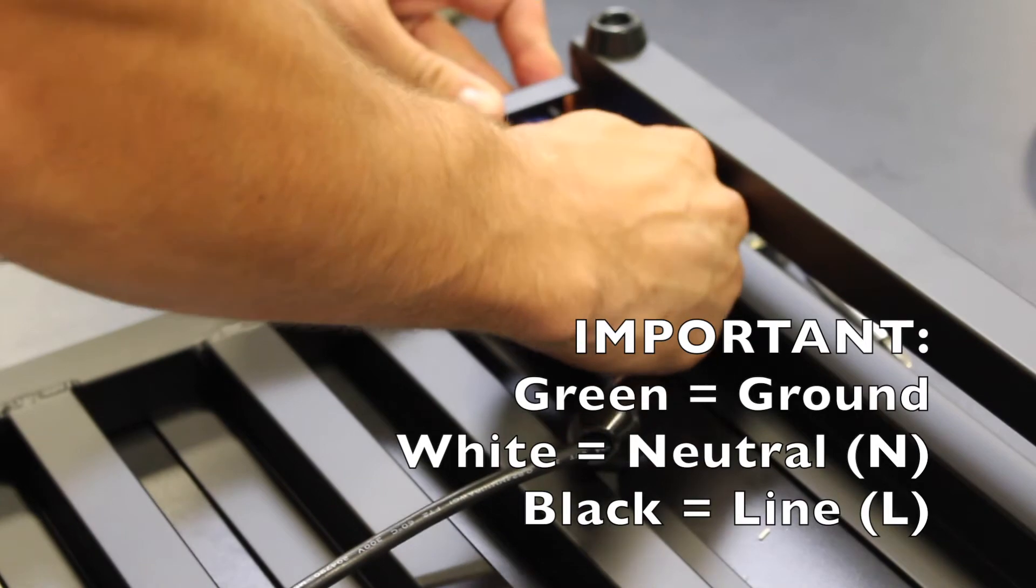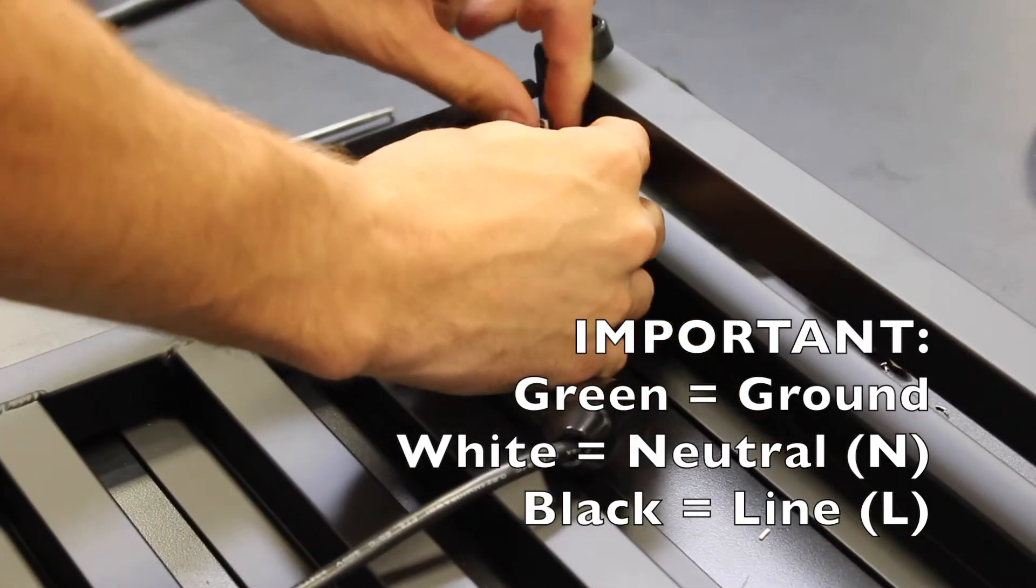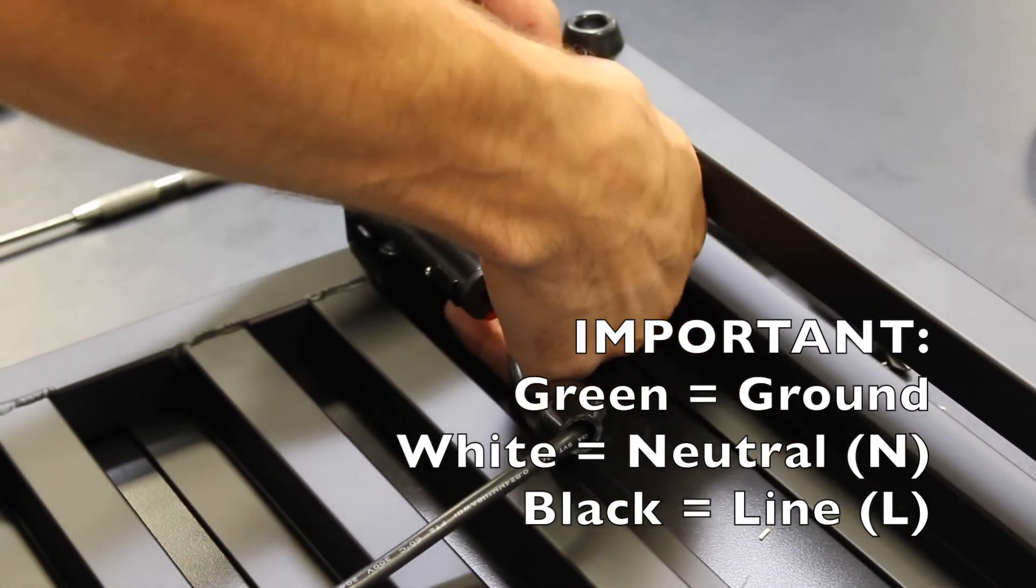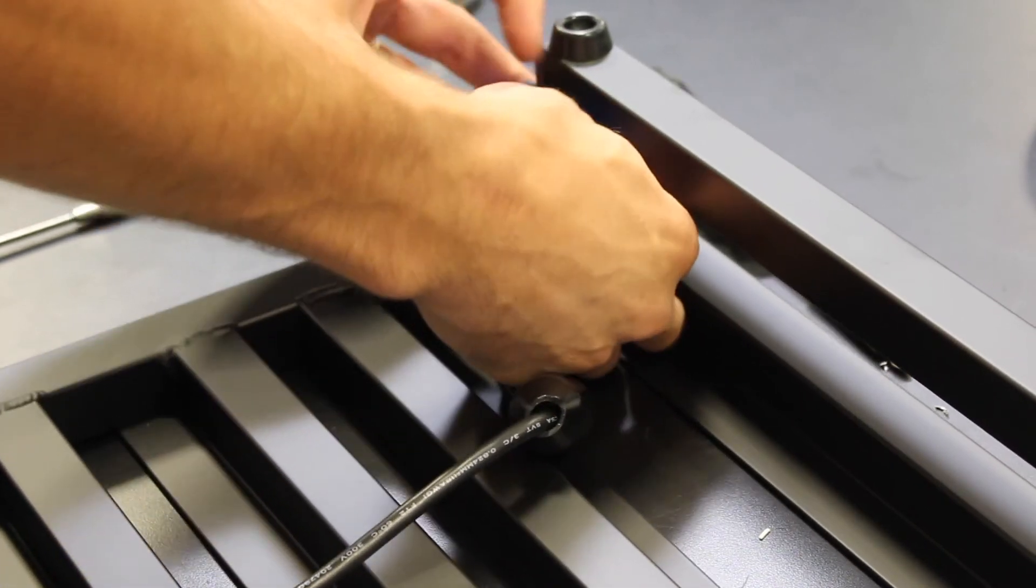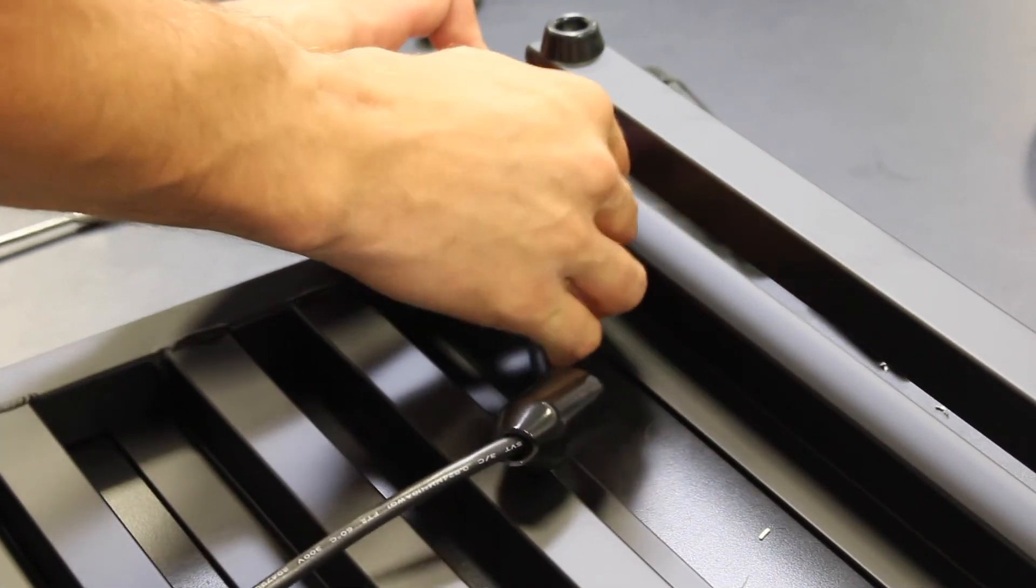If you have a little bit of trouble wiggling these onto the tabs of the power con, you might need to use needle nose pliers. Just grab it by the red insulation jacket of the tabs and wiggle them on that way.